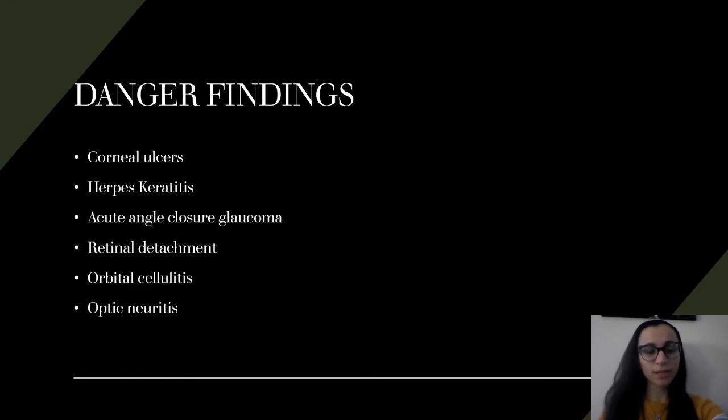Next we go on to acute angle closure glaucoma. So that's a danger finding. Let's just discuss glaucoma in general. Glaucoma is optic nerve damage from increased pressure in the eye. The pressure is going to put a lot of pressure, and you're going to have damage to the optic nerve. This leads to patches of vision loss, and there's two types. Number one is open angle, which is chronic. Number two is acute angle closure glaucoma. Open angle is you have a partial blockage. Pressure builds up over time, and it leads to peripheral vision loss and then central vision loss.